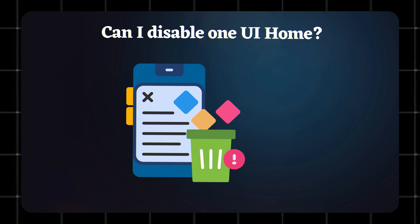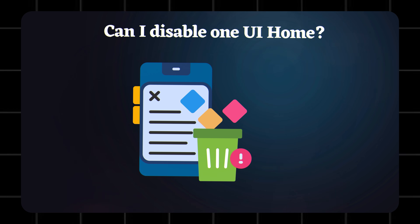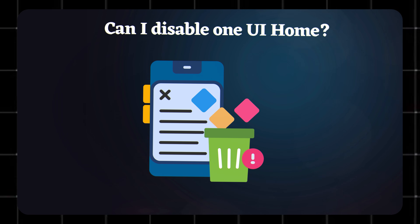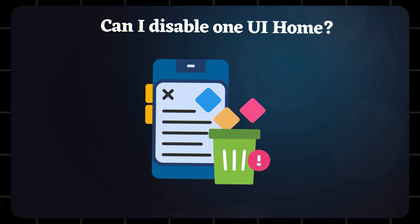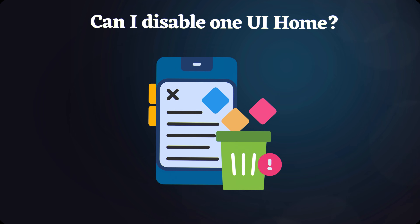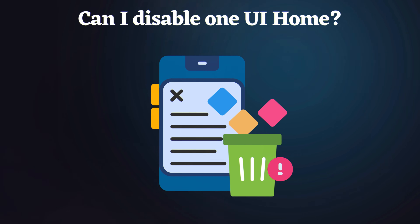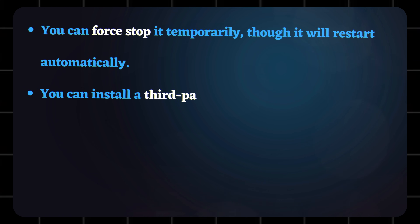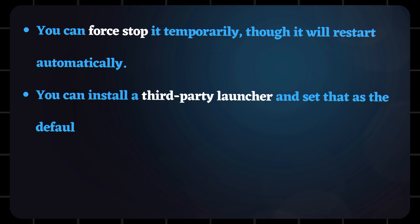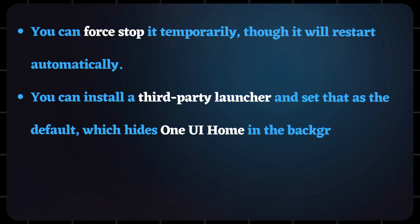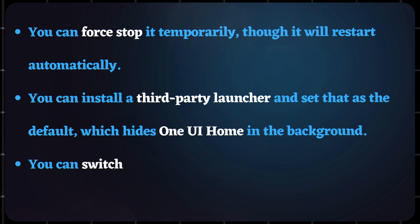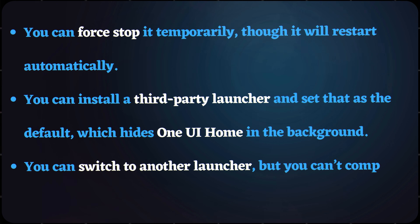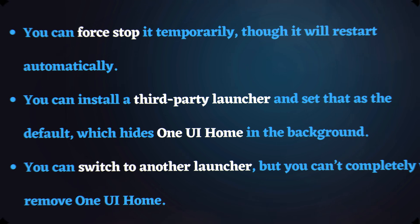Can I disable One UI Home? Technically, no. You can't fully disable or uninstall One UI Home without rooting your phone. But here are your options: you can force stop it temporarily, though it will restart automatically. You can install a third-party launcher and set that as default, which hides One UI Home in the background. You can switch to another launcher, but you can't completely remove One UI Home.